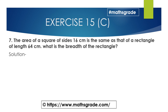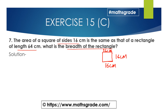Question number 7: The area of a square of side 16 centimeters is the same as that of a rectangle of length 64 centimeters. What is the breadth of the rectangle? It is given that the square has side 16 centimeters. We know all sides of the square are equal, so all sides are 16 centimeters. Area of the square is equal to area of the rectangle.